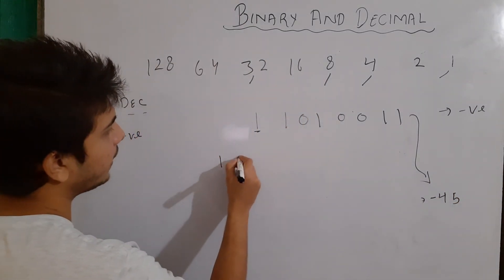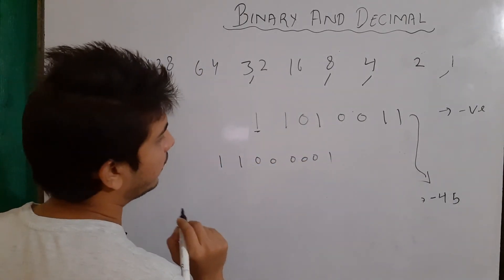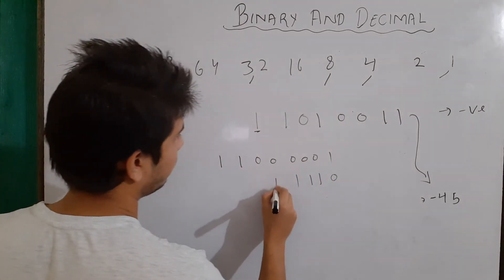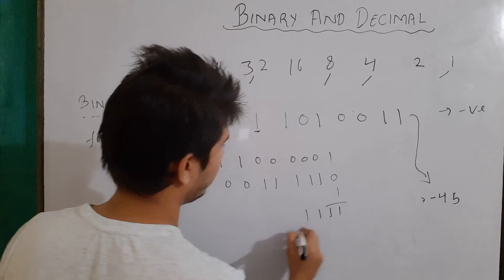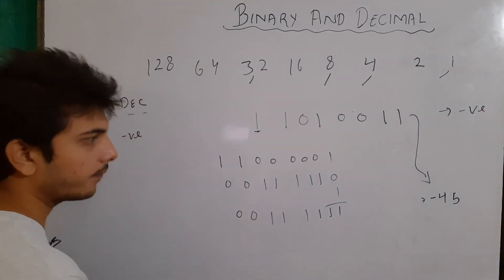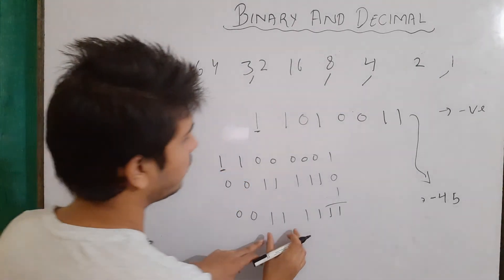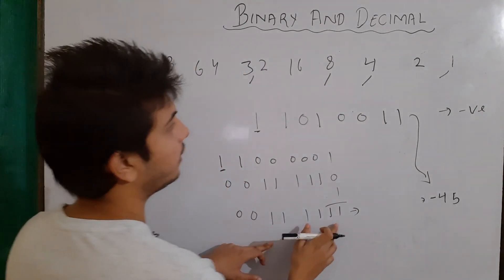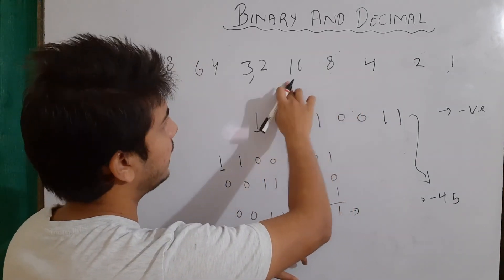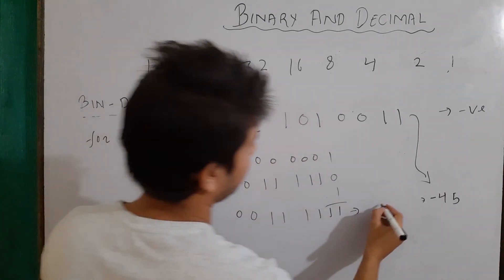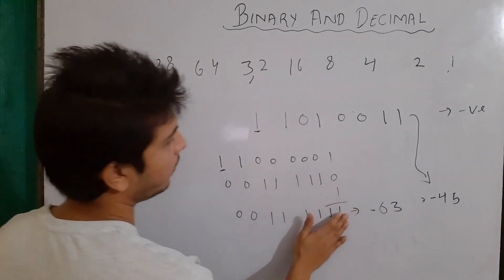Let's take another example: 1 1 0 0 0 0 0 1. Since the leading bit is 1, the number is negative. We find its two's complement: flip the bits to get 0 0 1 1 1 1 1 0, then add 1 to get 0 0 1 1 1 1 1 1. The decimal value is 1 plus 2 plus 4 plus 8 plus 16 plus 32 equals 63, so the decimal equivalent is minus 63.